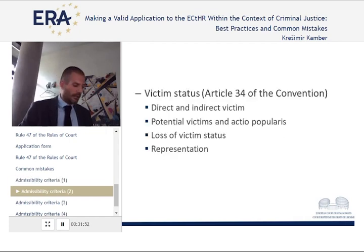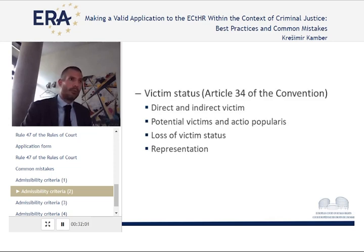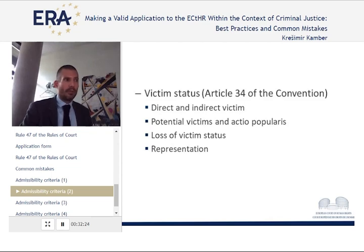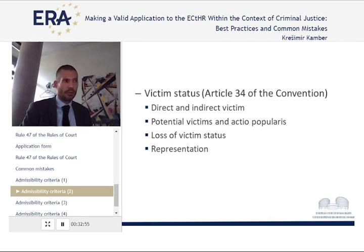Now let's go briefly through the admissibility criteria. The first is that the individual submitting the application must be a victim or alleged victim of a violation of the convention — someone directly affected by the measure complained of, or an indirect victim affected by a certain ricochet from the direct violation. There is also the concept of potential victims — someone potentially affected by current legislation in the state. However, what is not permitted is actio popularis: it is not possible to have general litigation before the court about global issues that don't sufficiently and directly or indirectly affect you.